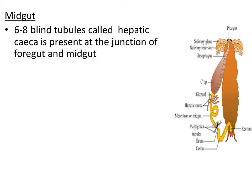The function of hepatic caeca: until the foregut, there is no proper digestion — only simplification of food takes place. From the gizzard, the ground food moves towards the part of the alimentary canal where actual digestion and absorption takes place. Enzymes are essential for digestion of food. Hepatic caeca secrete digestive juices required for the complete digestion of food material.